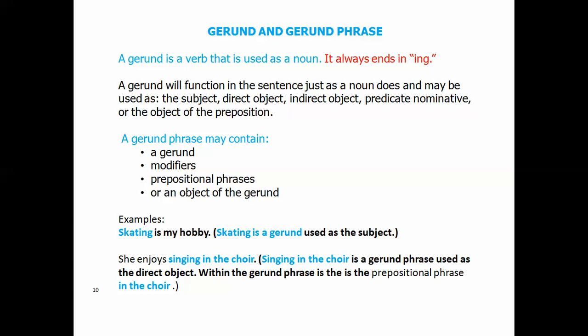She enjoys singing in the choir. She enjoys what? Singing in the choir is a gerund phrase that's used as the direct object. Now notice that within the gerund phrase, there's a prepositional phrase, in the choir.